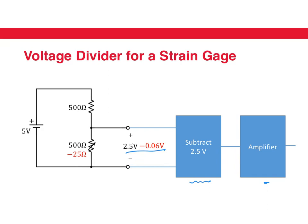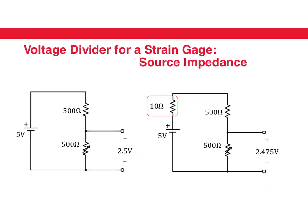Now let's think of other problems with voltage dividers. One other problem is the problem of source impedance. What happens if our source — the 5 volt source — has a 10 ohm source impedance? Then instead of having 2.5 volts at the output, you have 2.475 volts. So depending on the source you use, your source impedance can change. And if the source impedance changes, the output of your voltage divider changes, and you don't know whether the change is due to the resistance change or the source impedance.